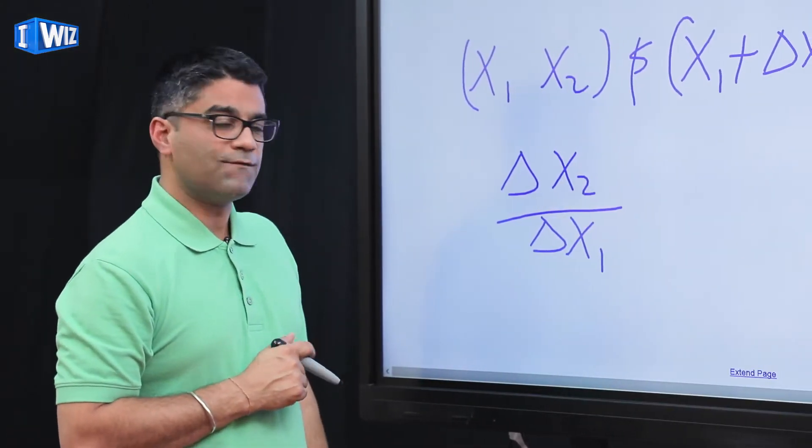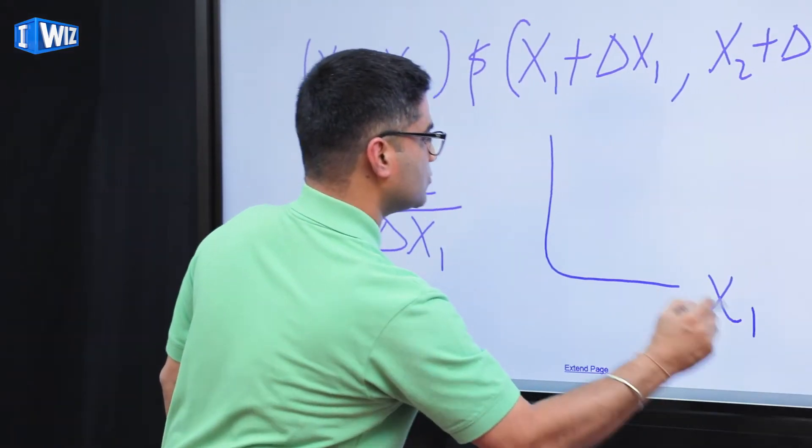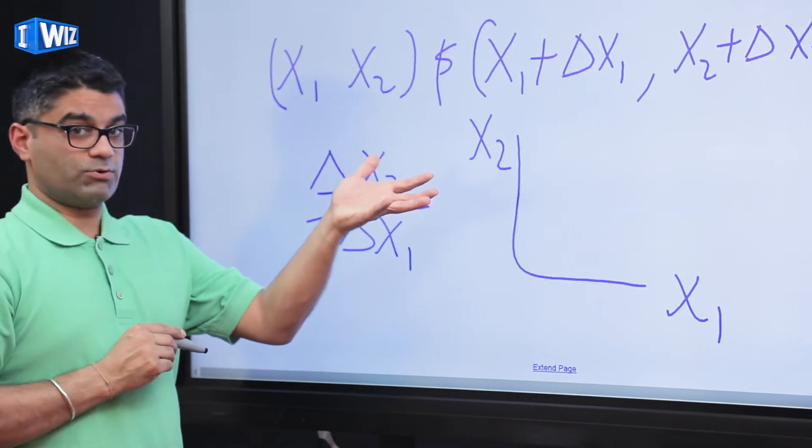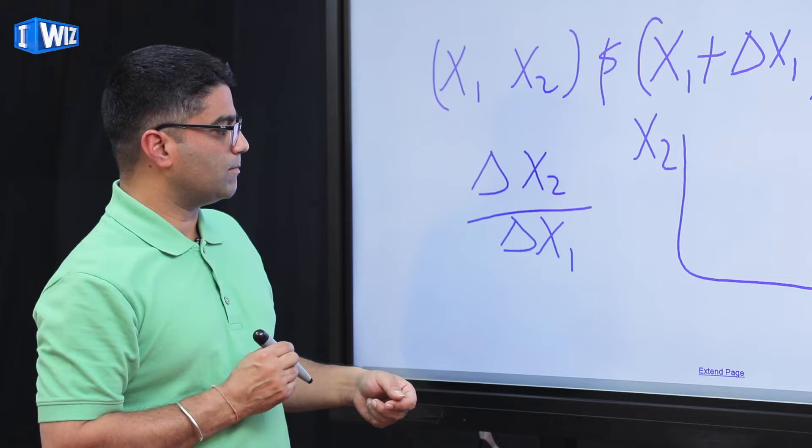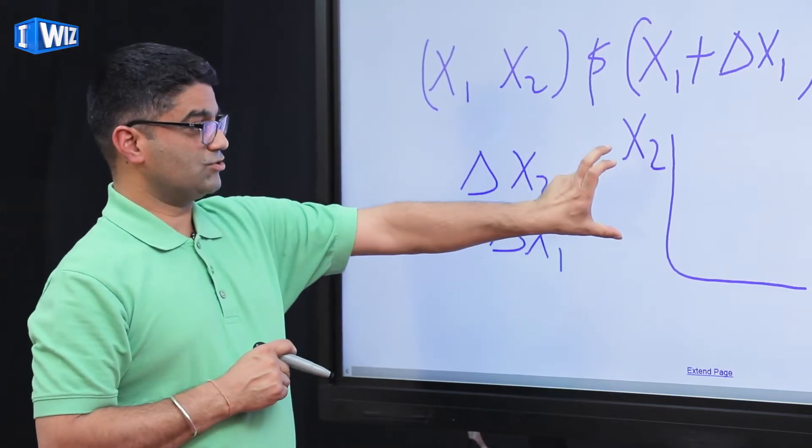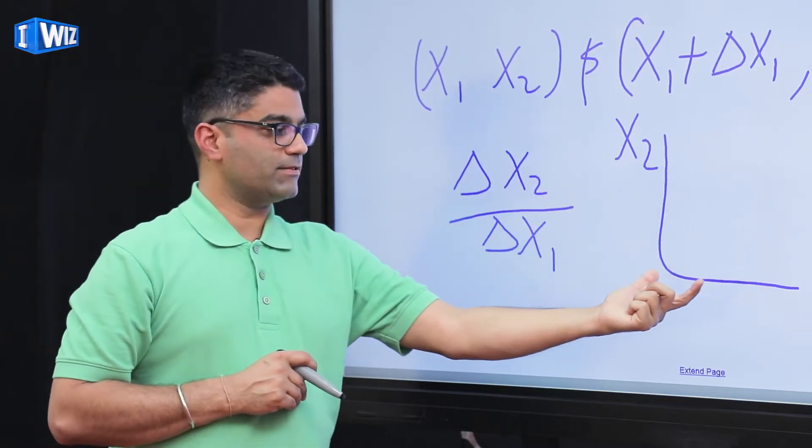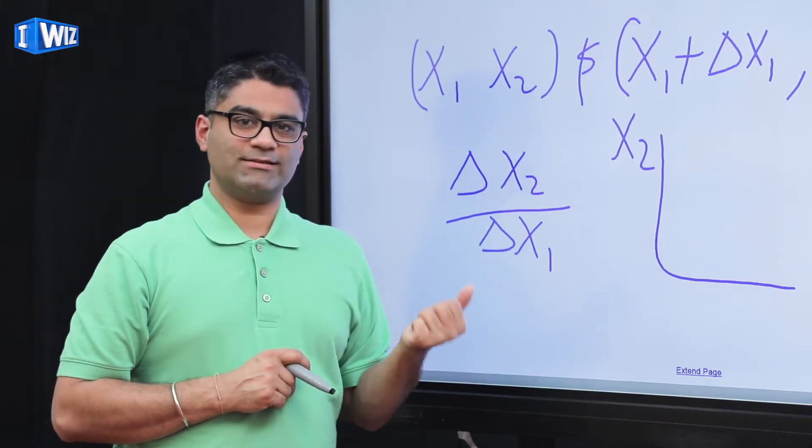We've talked about this on the graph where we have x1 and x2. So you have x1 and x2 on this graph that we've talked about before. If you look at this ratio, this is just the change in the vertical axis divided by the change in whatever the variable is on the x axis.